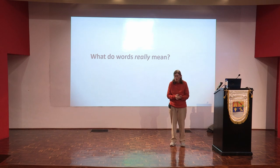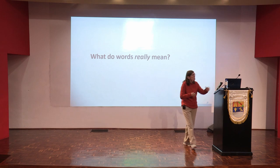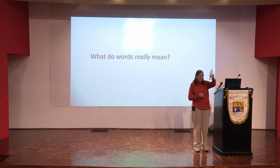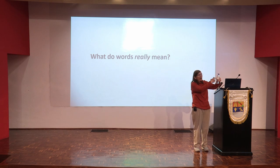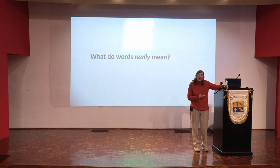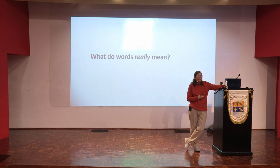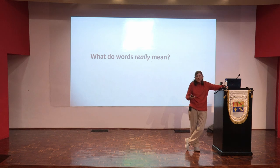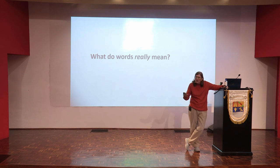If you have the word 'bottle,' you can clearly see this is a bottle — it's got a napkin on it and things like that. But what do you do when you have a word like altruism, or truth, or consequences? What do you do about these kinds of words? How do you know what they really mean?